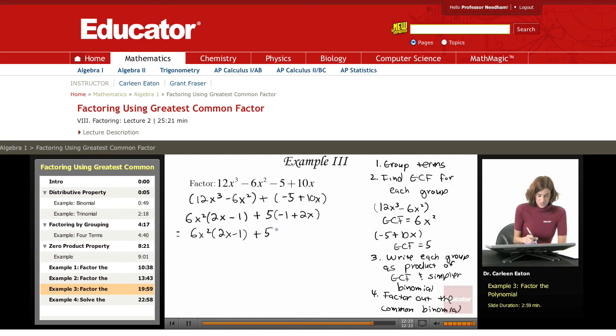Instead of writing negative 1 plus 2x, I'm just going to write 2x minus 1. And once I do that, I see that I have a common binomial. And I'm going to pull that out, and it's going to leave me with 6x squared plus 5.